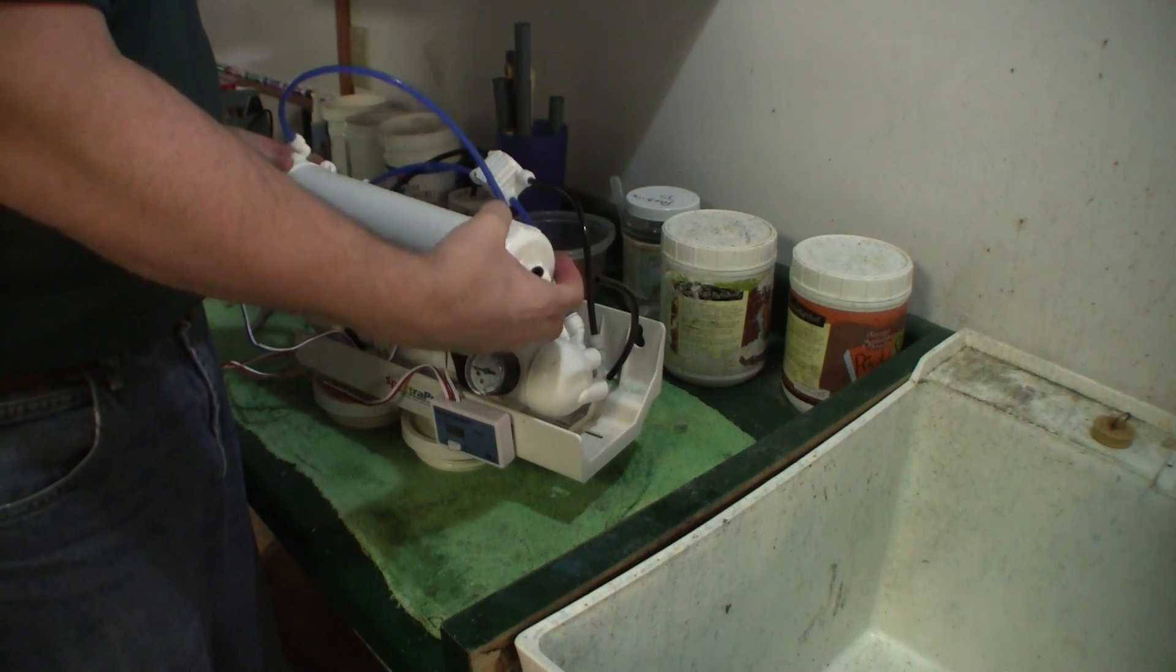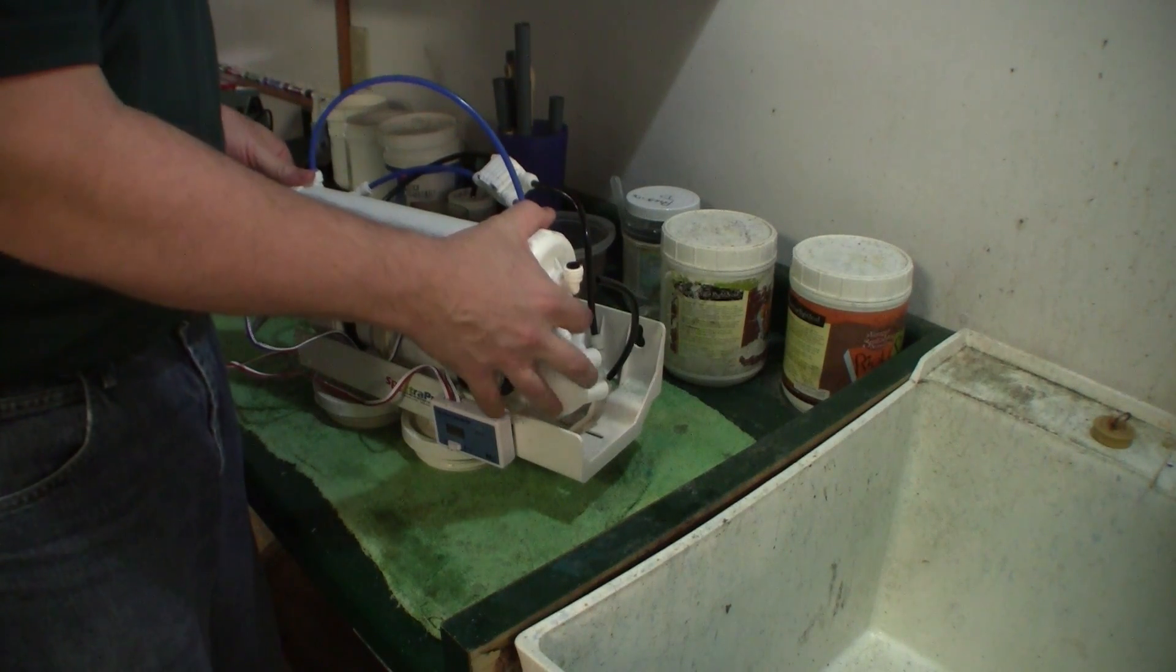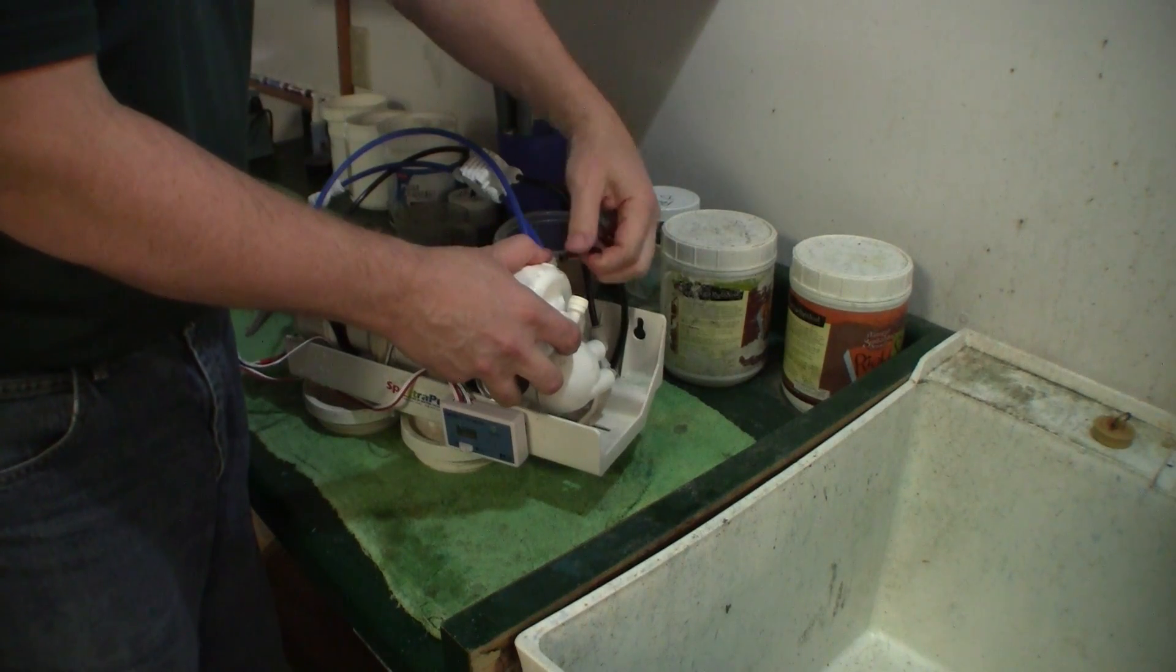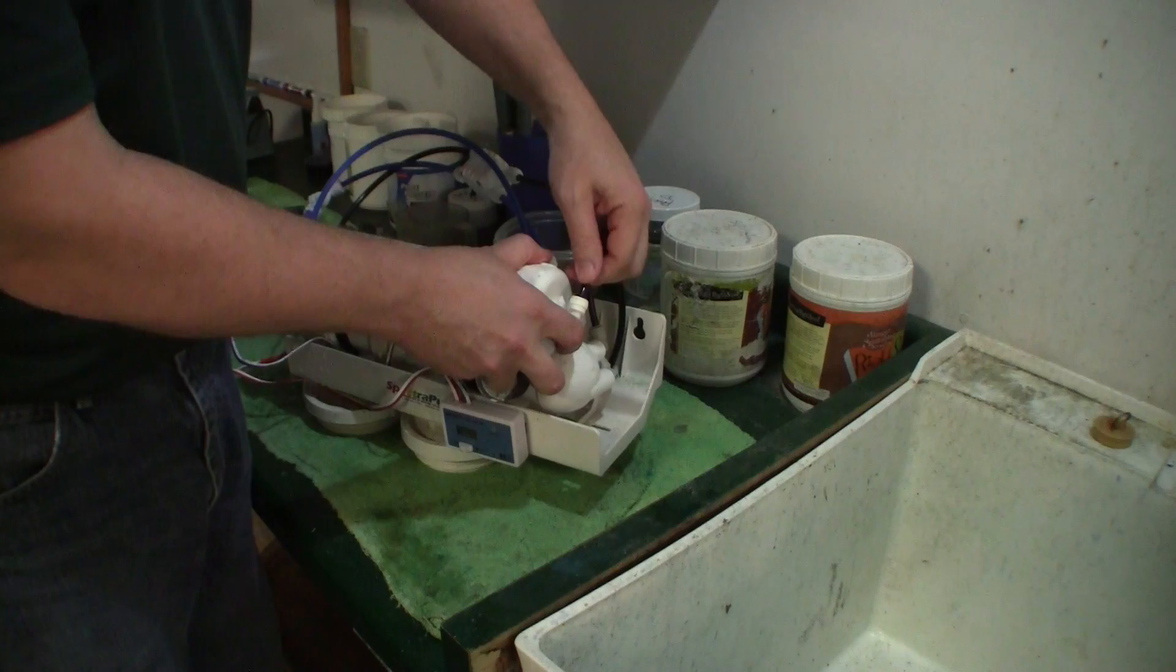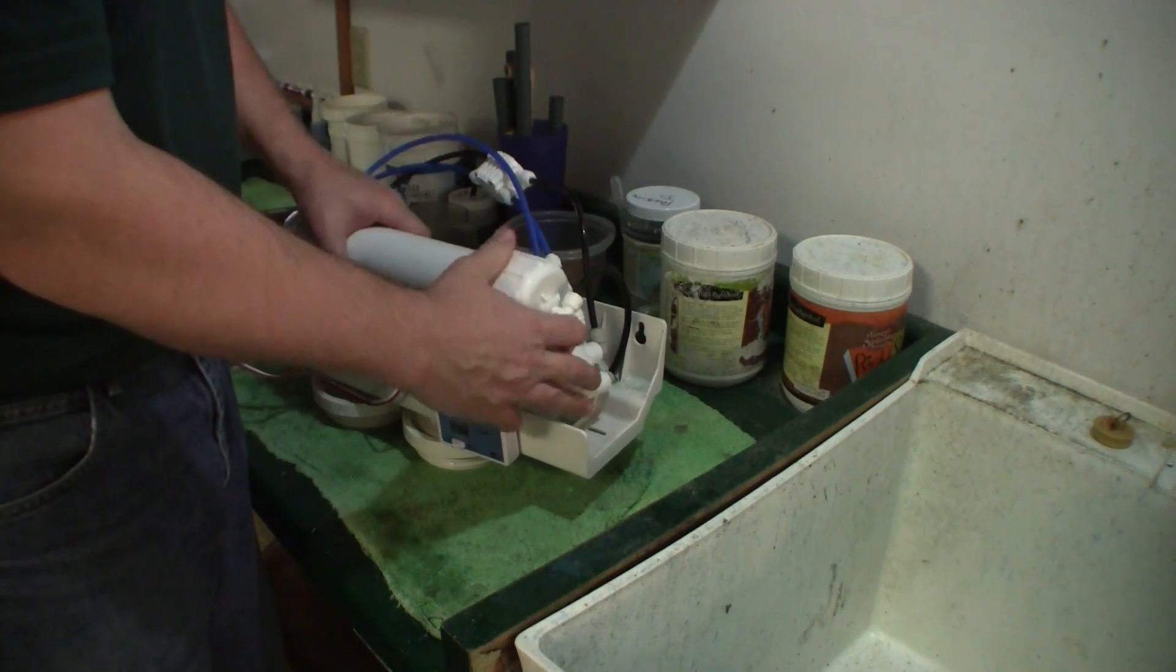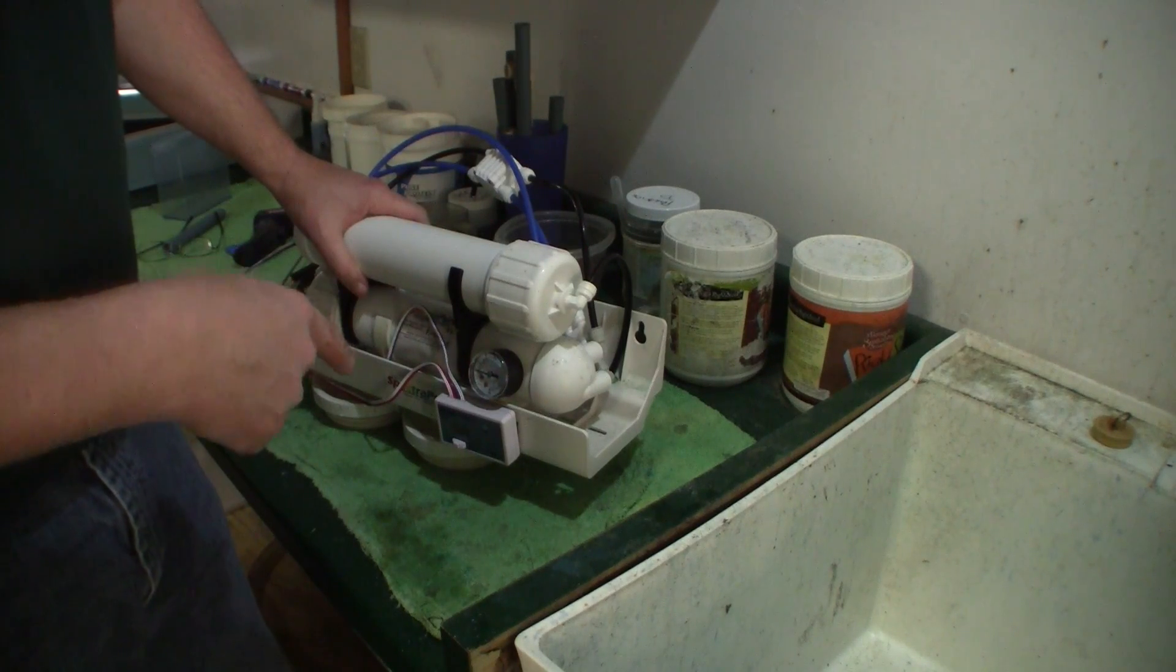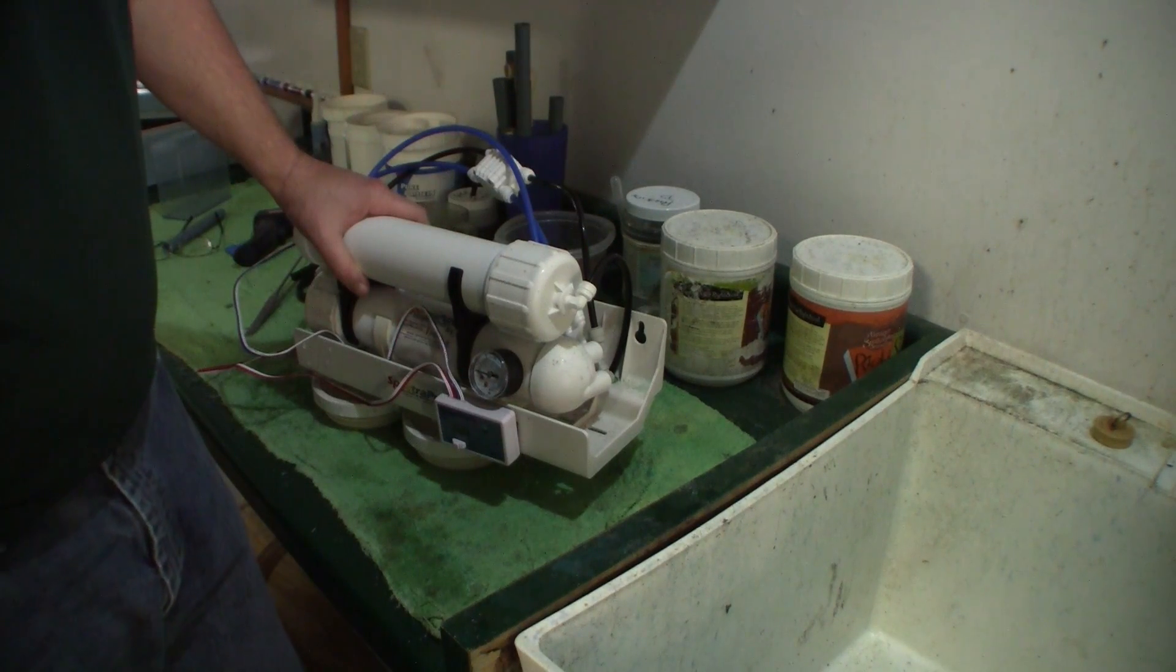And once you've changed both of the membranes, you can reassemble your unit. It's pretty important to make sure that you look at where all the tubes go, or maybe even mark them. Because once you take all the tubes off one of these things, getting them back on in the right order can be tricky.